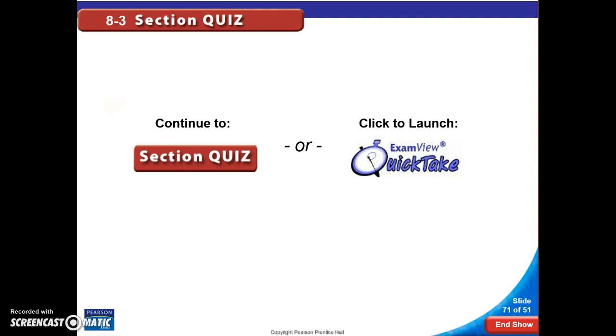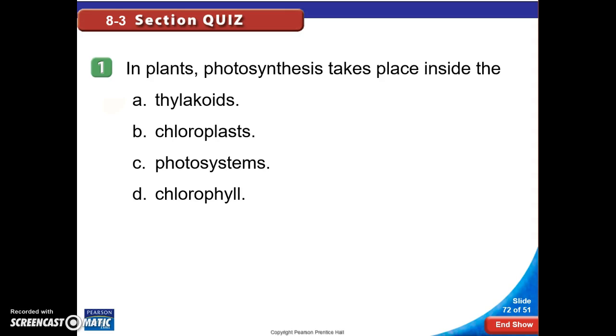I'm going to end with the quiz. This is just some sample questions of things that you should be familiar with. In plants, photosynthesis takes place inside. In general, the answer is going to be inside the chloroplast. If it had asked you where is the light-dependent reaction occurring, you would have said the thylakoid. You could also almost say it's happening inside chlorophyll. But it's just saying, in general, where is photosynthesis occurring - the two different parts together. That's inside the chloroplast.